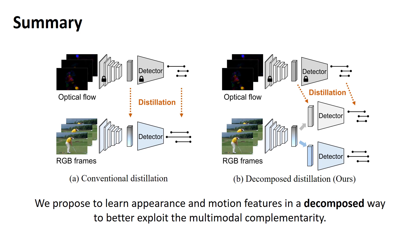As shown in the left of the figure, the conventional distillation method transfers the motion knowledge to the RGB model directly, leading to entangled multimodal information. This makes it difficult to balance between the two modalities.